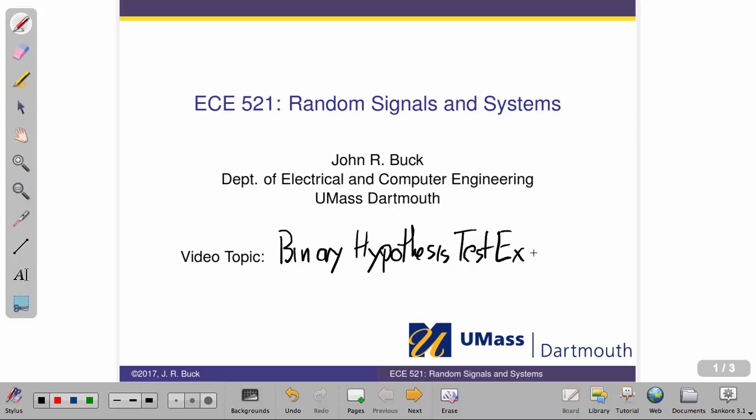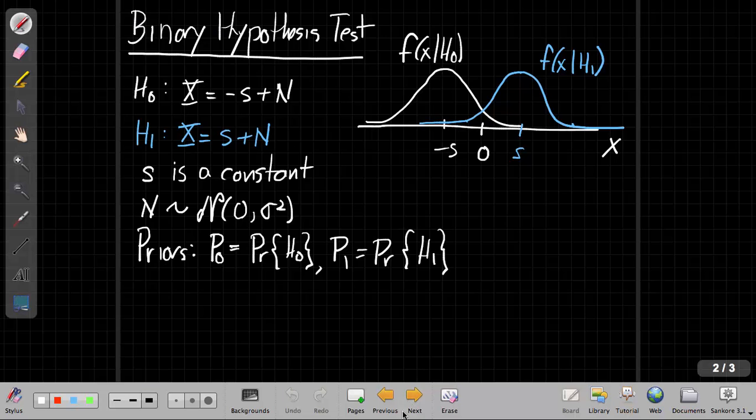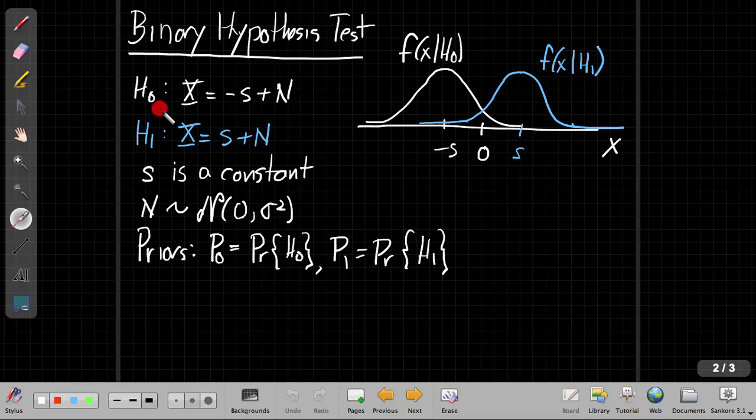So if we move on to the next page, I've already laid out the basics of the problem. I'll talk through it now. The idea with the hypothesis test here is I have two different signal models. Under the null hypothesis, the signal I observe X is some constant minus S plus noise. For H1, X is plus S plus noise. This is basically a basic binary communication system. I either transmit a positive or negative voltage, and then I have some noise coming through.